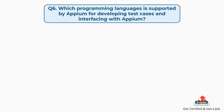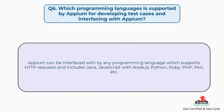Question number 6: Which programming languages are supported by Appium for developing test cases and interfacing with Appium? Appium can be interfaced with by any programming language which supports HTTP requests, and includes Java, JavaScript with Node.js, Python, Ruby, PHP, Perl, etc.